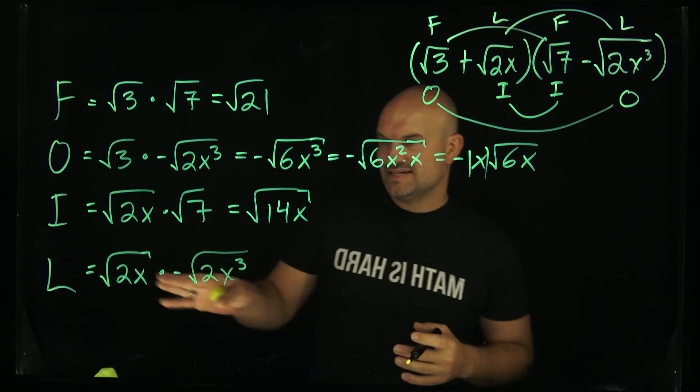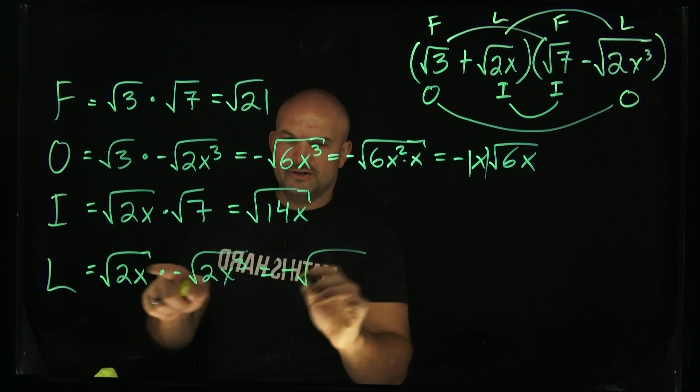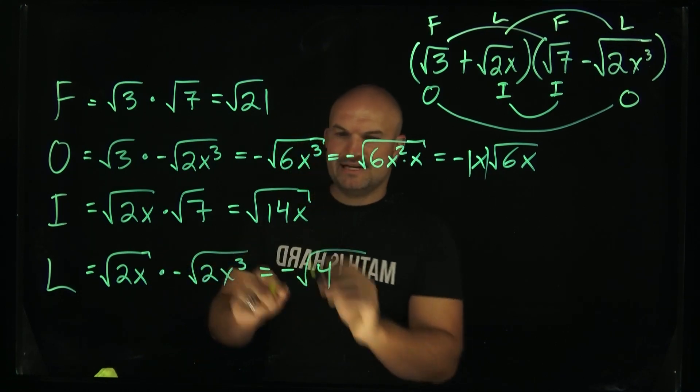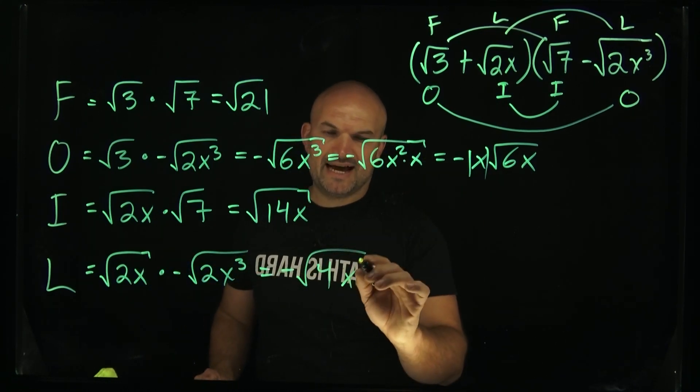In this case, we're going to have a negative. 2 times 2 is 4. And then x times x cubed, remember, add the powers. That's going to be x to the fourth.